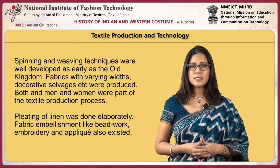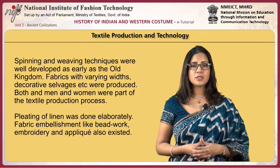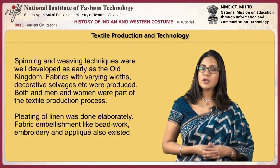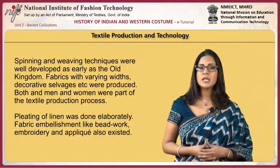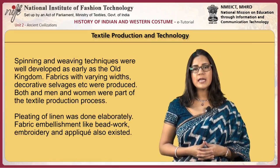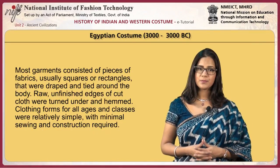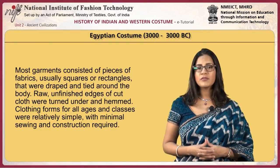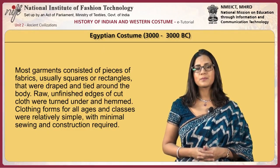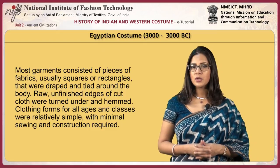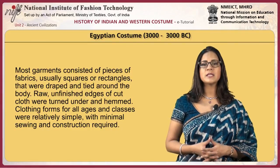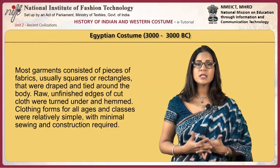Spinning and weaving techniques were well developed as early as the Old Kingdom. Fabrics with varying widths and decorative selvedges were produced, and both men and women were part of the textile production process. Pleating of linen was done elaborately. Fabric embellishments like beadwork, embroidery and applique also existed. Most garments consisted of pieces of fabric — usually squares or rectangles — that were draped and tied around the body. Raw, unfinished edges of cut cloth were turned under and hemmed. Clothing forms for all ages and classes were relatively simple, with minimal sewing and construction required.